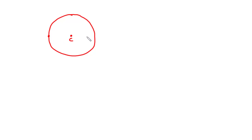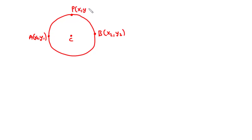Assuming that we have a circle with C as the center, and two points A and B on the circumference of the circle. A has coordinates (x1, y1) and B has coordinates (x2, y2). We also have a point P on the circumference with coordinates (x, y). Now let's join line AB, which passes through the center — hence we call this the diameter.